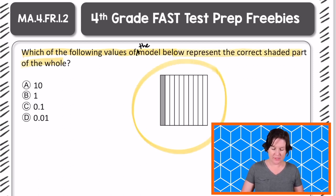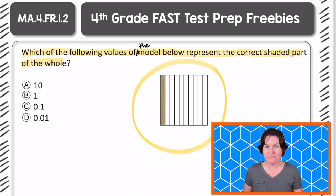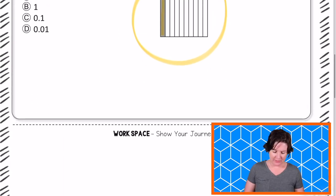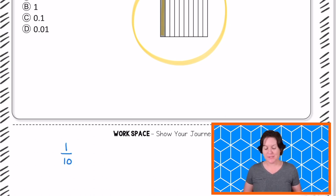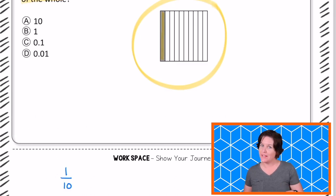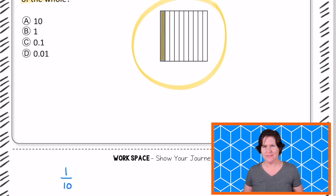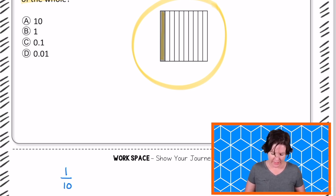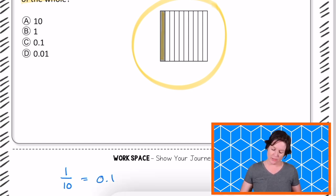So if we're considering that this is one whole, we have one piece shaded in right there out of how many? 10, right? So when I'm thinking of this in terms of a fraction, I would write this as 1/10. But I don't see the fraction amount there. However, I do see decimals. Which one has the digit 1 in the tenths place? C, right? What's wrong with D? The one is in the hundredths place, so that one would not work. So 1/10 is equivalent to that decimal form, and we can go ahead and select C right there.